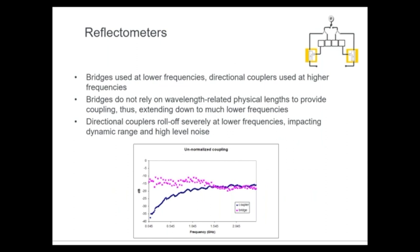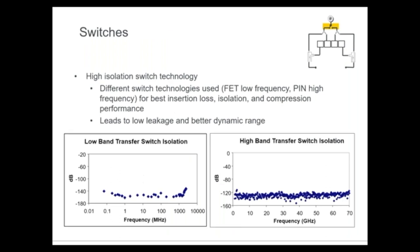For reflectometers there are two distinct approaches. Directional couplers are typically used at high frequencies in microwave VNAs but are wavelength-dependent, so they roll off at lower frequencies. Directional bridges are used more in RF VNAs and work well at low frequencies. Ideally, you'd combine both to create the most broadband VNA possible. Similarly for switches: FETs are used at low frequencies, PIN diode switches at higher frequencies, to optimize insertion loss, isolation, and compression — specifically the IP3 or IMD performance of the switch.